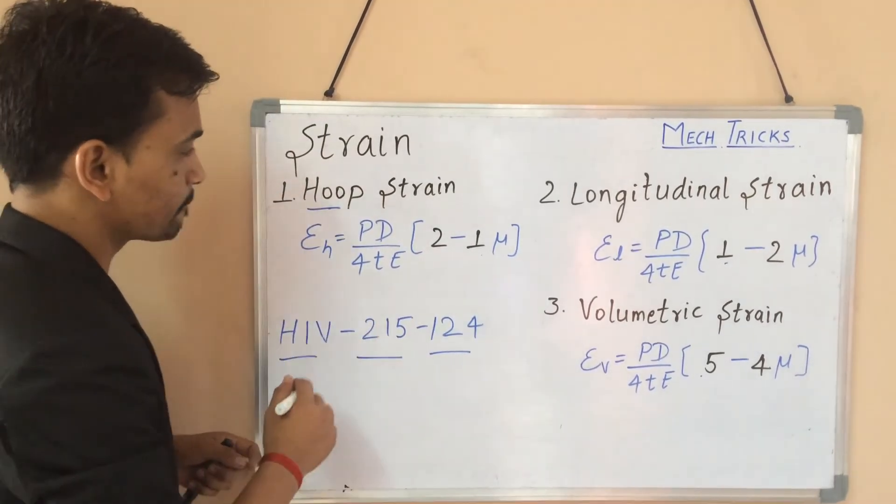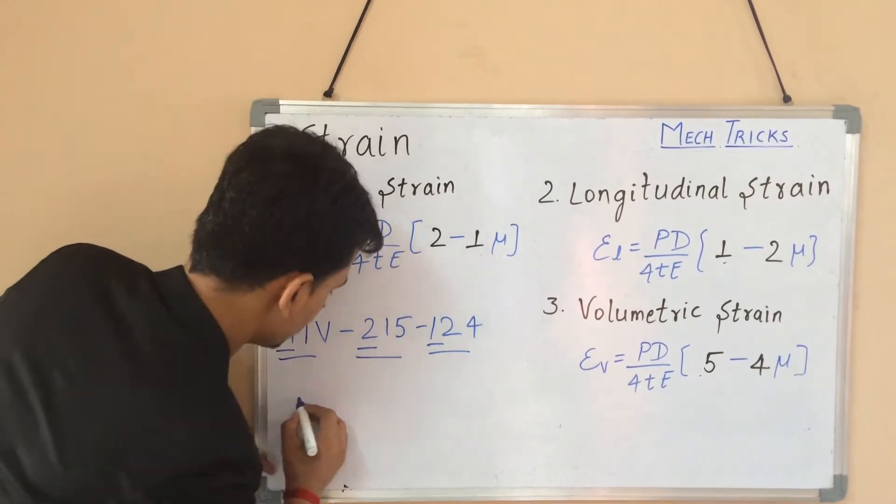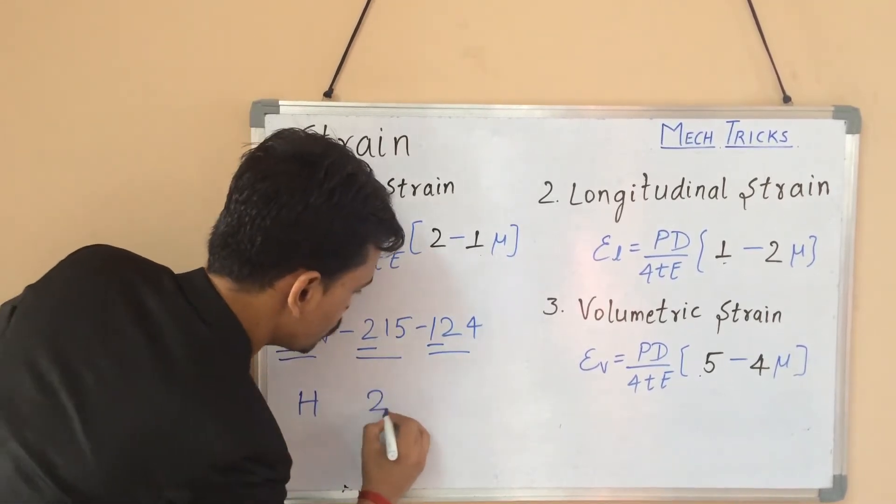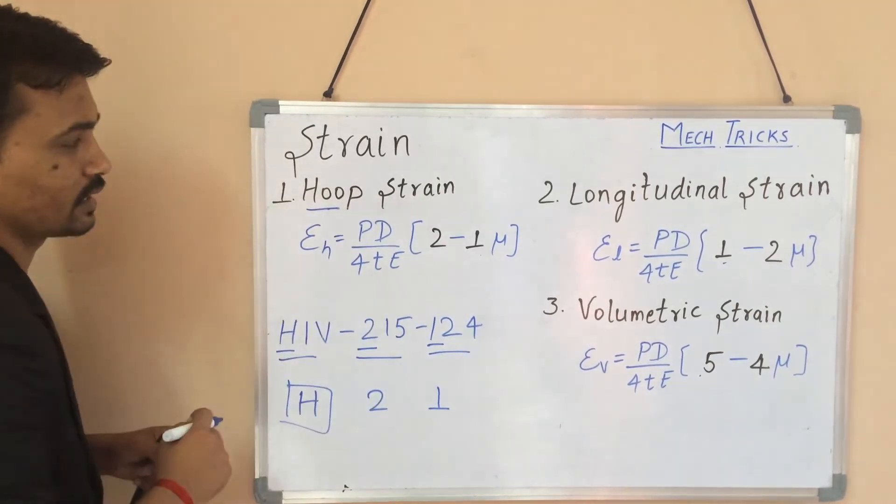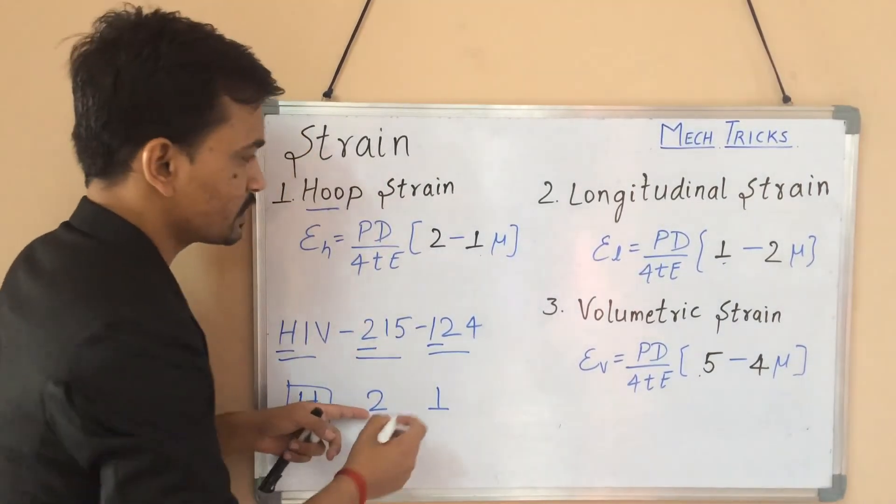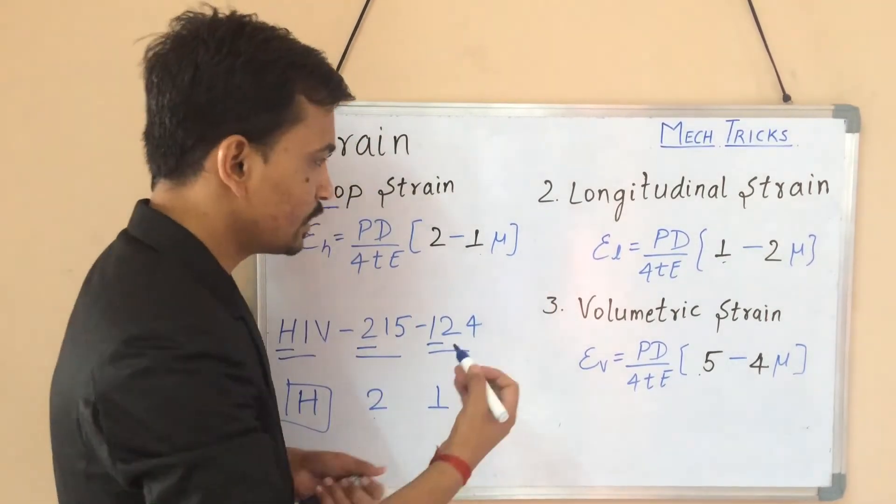Now let me relate this thing. I am taking first one alphabet from these three things: that is H, 2, and 1. Here H belongs to this hoop strain. And this two is taken from here. And this one will come over here.